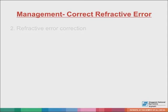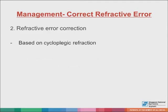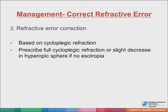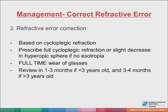If there is a significant refractive error and amblyopia is present, the refractive error correction needs to be based on the cycloplegic refraction. In general, prescribe the full cycloplegic refraction, or a slight decrease in the hyperopic sphere if there is no esotropia. Parents need to be advised that full-time wear of glasses is required. In general, we will review the child in one to three months if they are less than three years old, and in three to four months if they are more than three years old.